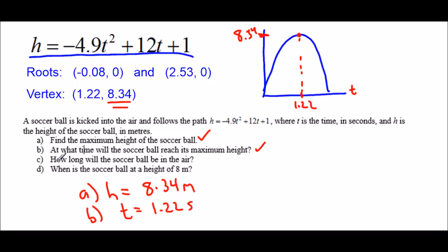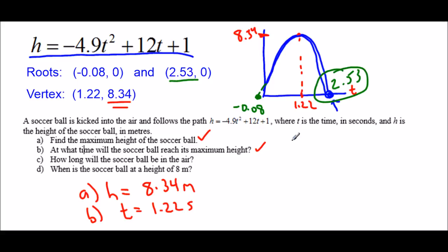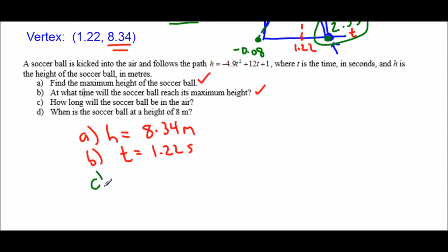Part C: how long will the soccer ball be in the air? At the moment it's kicked it flies up, up, up, and then comes back down and hits the ground — that's an x-intercept. Looking at our roots, one is slightly negative (which doesn't make physical sense but makes algebraic sense), and the other root is 2.53. So the ball hits the ground at 2.53 seconds. Answer for C: the soccer ball is in the air for 2.53 seconds.